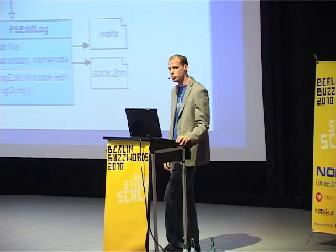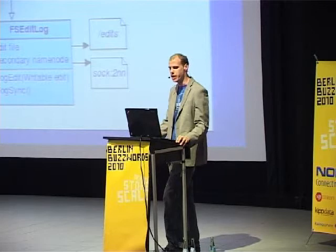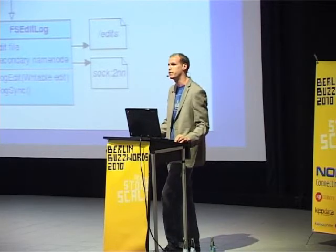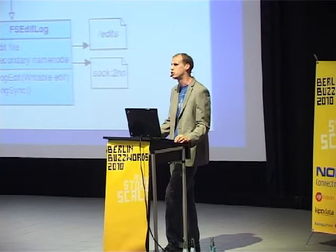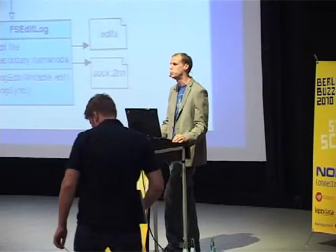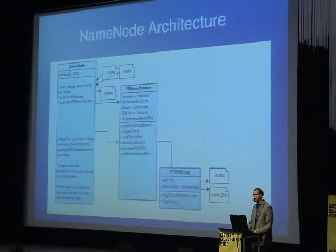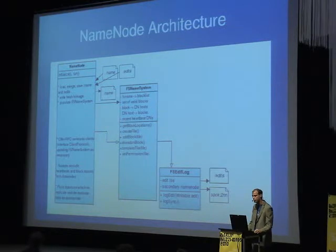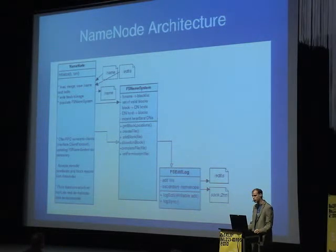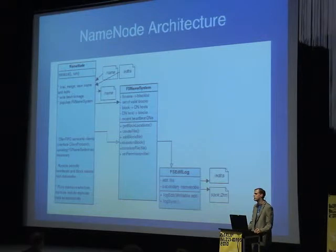When you start up the name node, you have two directories with data: the name directory — the FS name system data structure serialized to disk, basically your entire namespace — and an edit log which is continually appended to. As transactions change the state of the file system — adding directories, deleting files — those are added to the edit log. The edit log is periodically synced, and it writes not only locally but also to a secondary name node — which despite its name doesn't actually provide secondary failover functionality. It's basically just a repository for that edit log.